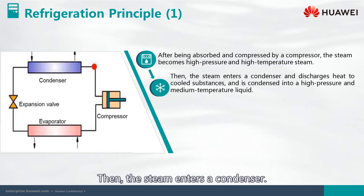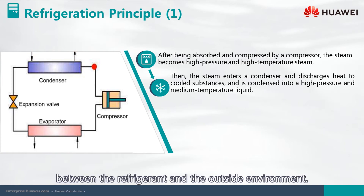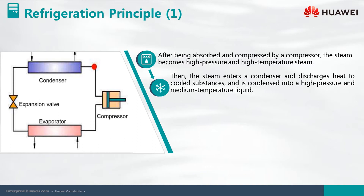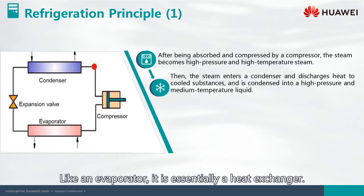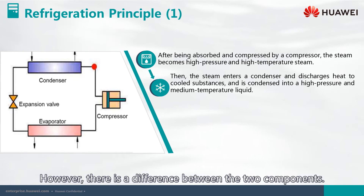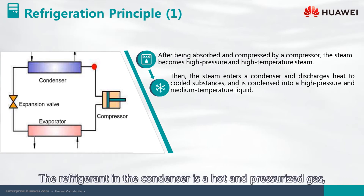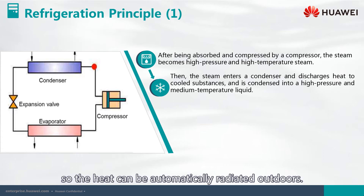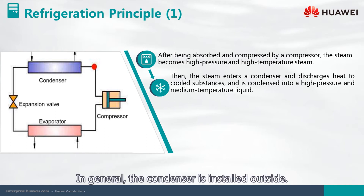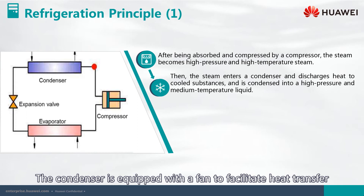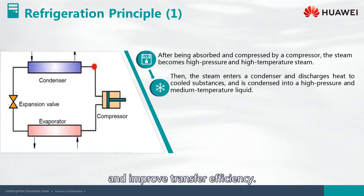Then the steam enters a condenser. The condenser facilitates heat exchange between the refrigerant and the outside environment. Like an evaporator, it is essentially a heat exchanger. However, there is a difference between the two components. The refrigerant in the condenser is a hot and pressurized gas, so the heat can be automatically radiated outdoors. In general, the condenser is installed outside, and is equipped with a fan to facilitate heat transfer and improve efficiency.